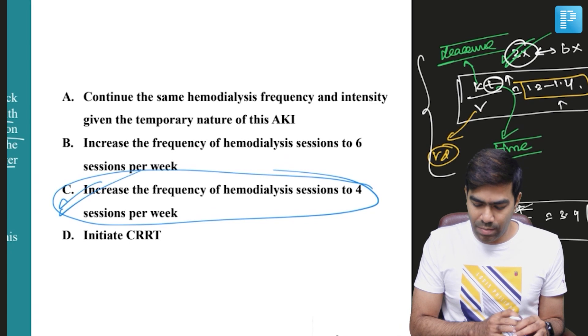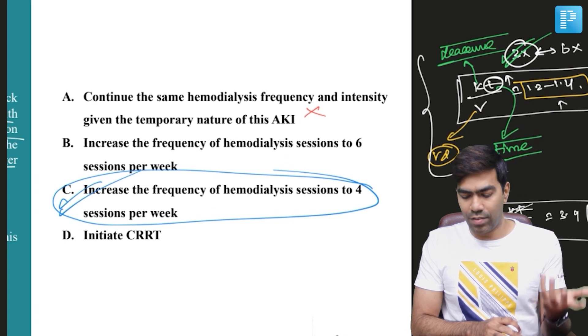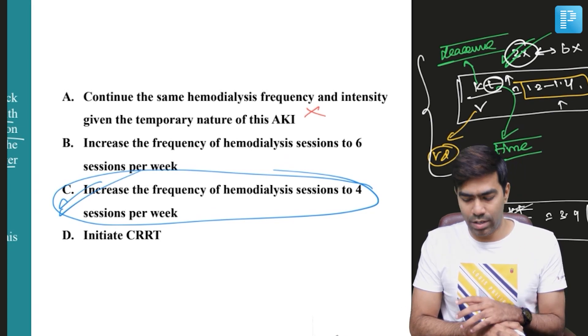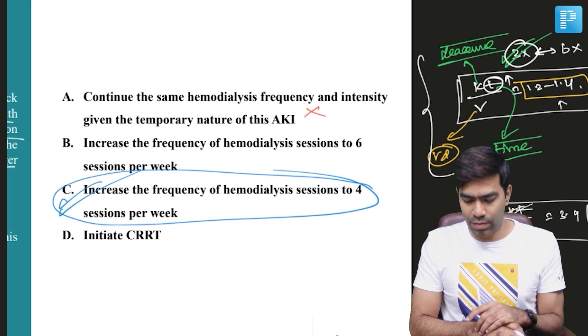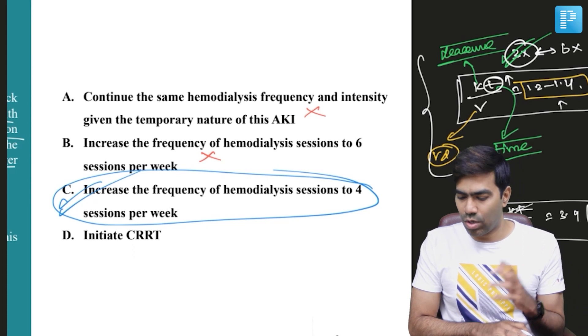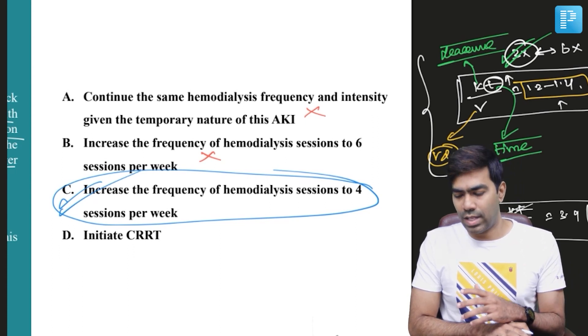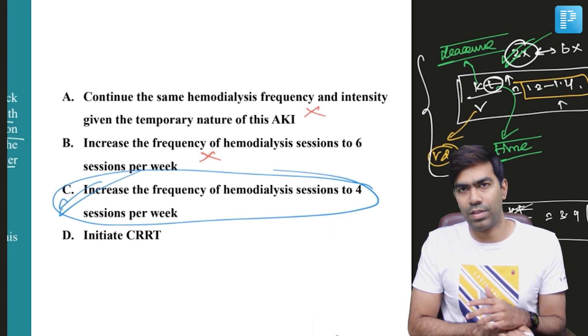What are the options here? Option A: Continue the same hemodialysis frequency and intensity given the temporary nature of this AKI. That's wrong—giving under-efficient dialysis is associated with higher mortality, so you should not do that. Option B: Increase the frequency of hemodialysis sessions to six times per week. This is also not recommended. If you can improve the KT/V to 1.2 to 1.4, you need not increase the dialysis frequency to six sessions per week.